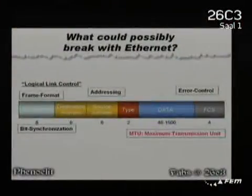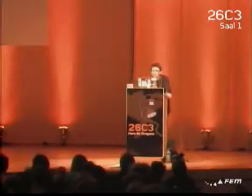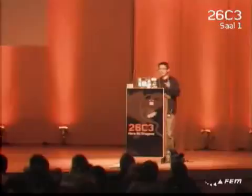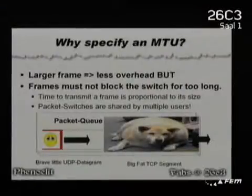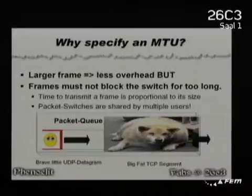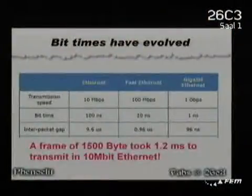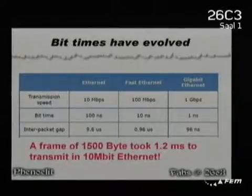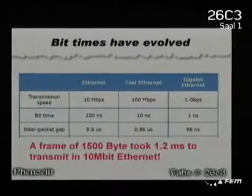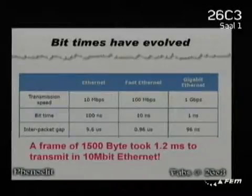There's addressing, error control, stuff like that — but then there's the MTU, and this is very interesting. It's the maximum transmission unit: the maximum size of a frame you can have. In the past, the 1500-byte MTU of Ethernet made sense because in 10 megabit Ethernet, transmitting this took 1.2 milliseconds. But now we are 100 times faster in gigabit Ethernet, so of course we should adapt the frame size.